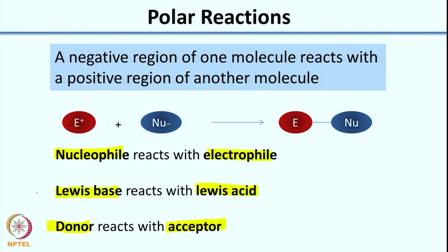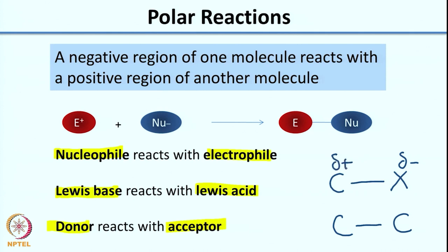Since organic reactions essentially involve carbon, if I look at carbon bonded to another species X, and both are carbon (C–C), both atoms take the electrons of the bond similarly. But if X has a greater tendency to pull electrons toward itself, X ends up with a small negative charge (delta minus) and carbon ends up with less electron density (delta plus). Even with a neutral molecule, you generate a small positive and a small negative charge, which is essential for polar reactions.